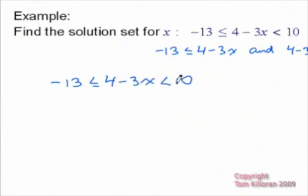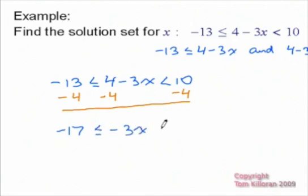And whatever you do to the middle, you do to the outers. So here I'm going to subtract 4 from the middle. So that means I have to subtract 4 from the left and subtract 4 from the far right. And that way I don't have to deal with two inequalities. I can just deal with this one conglomerate thing. So this side will give me negative 17 is less than or equal to negative 3x, which is less than 6.